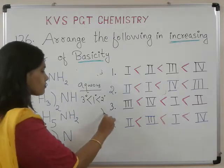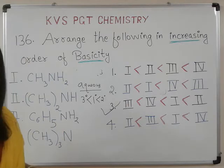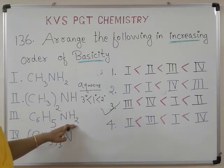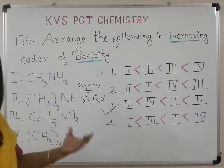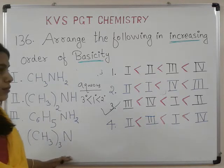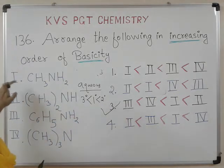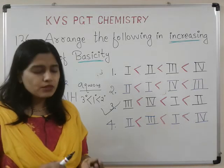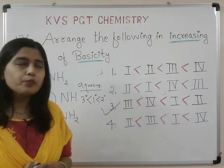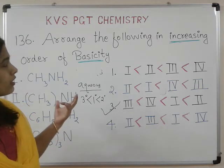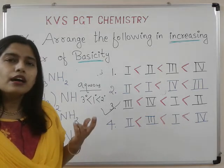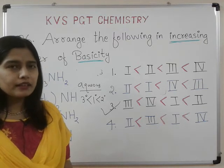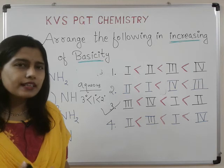So the correct answer is option number 3, where the increasing order of basicity is: C₆H₅NH₂ (least basic, aromatic amine) < tertiary amine < primary amine < secondary amine (most basic). I hope this question is clear to you, children. You can see the detailed explanation of basicity of aliphatic and aromatic amines in the previous video where I discussed it.